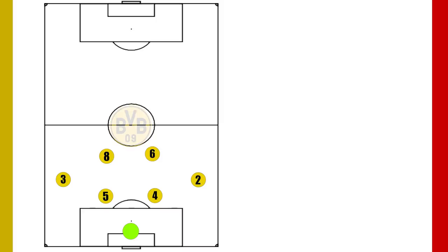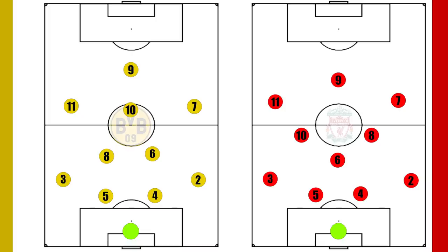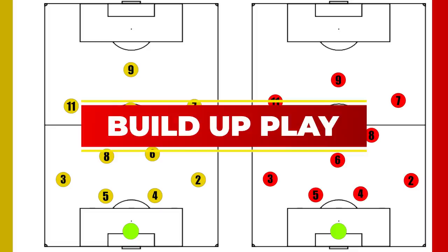Formationally, at Dortmund, Klopp almost always stuck with his trusted 4-3-1. At Liverpool, after much experimentation in the early days, he settled on the 4-3-3 in almost every match. Please note that all players in the different formations were given the same numbering scheme to make it easier to see how players in the same position operated differently across the two teams.